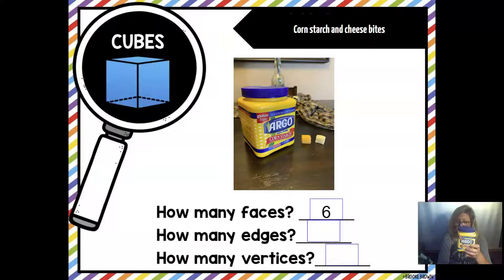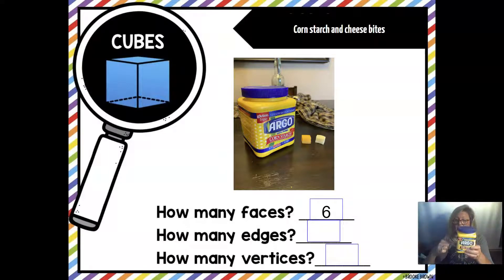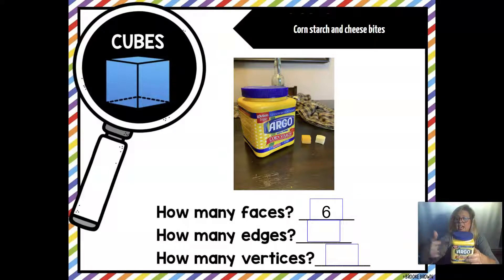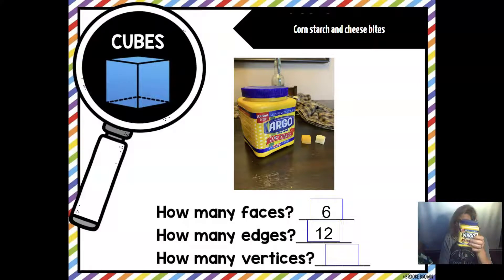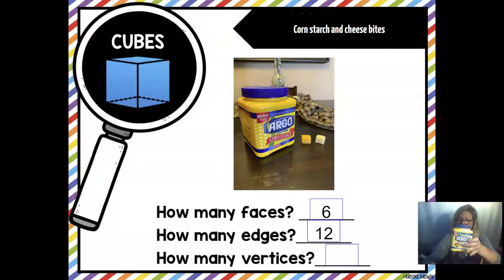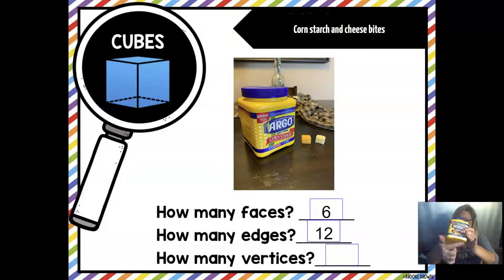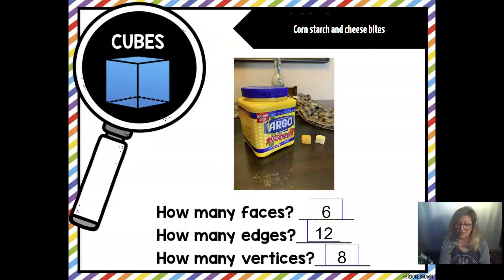How many edges? The edges are tricky. There are one, two, three, four on the top, four more on the bottom — that would be five, six, seven, eight — but don't forget those on the side: nine, ten, eleven, twelve. And how many vertices? One, two, three, four on the top and four more on the bottom: five, six, seven, eight. And those were our cubes from my shopping trip.